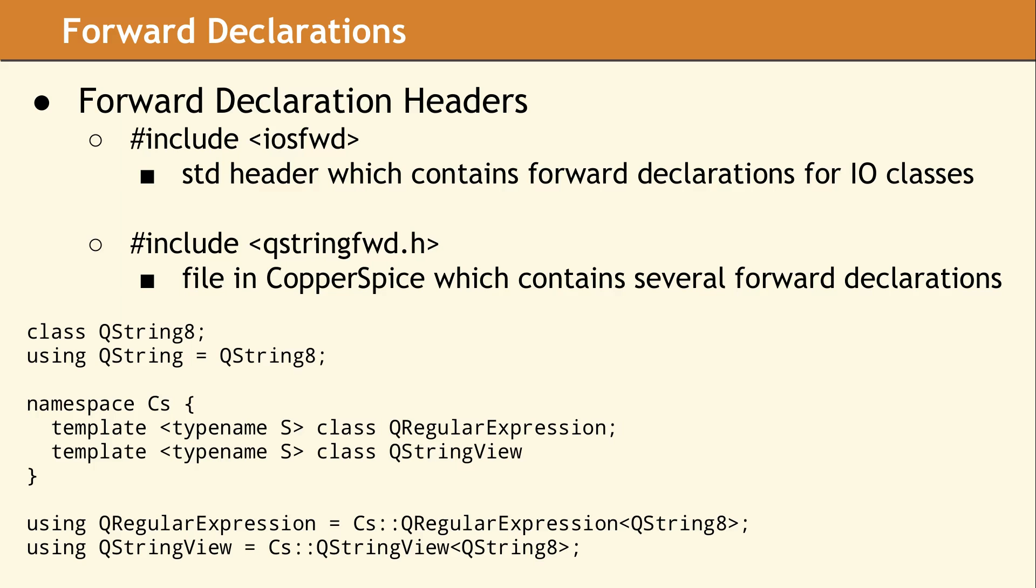In the Copper Spice library, we have a class called QString8. There is also a type alias for QString8 called QString. By creating the QString FWD header file, we give users a simple way to forward declare the string types provided in Copper Spice. This gives the flexibility to change the implementation of these classes without the need to refactor the entire Copper Spice library. This header file is a very convenient way to encapsulate all the details of forward declaring multiple string data types.